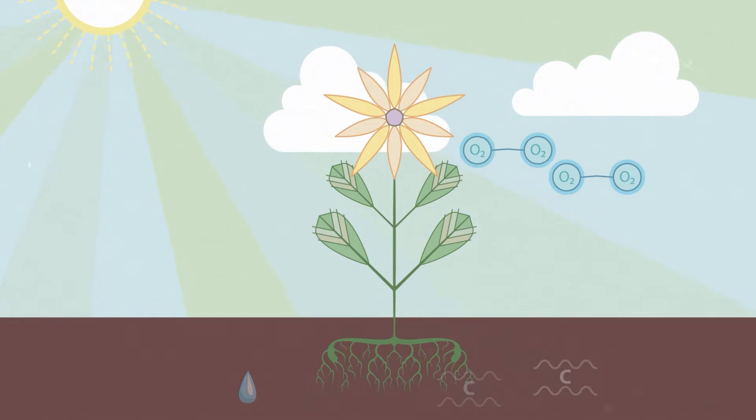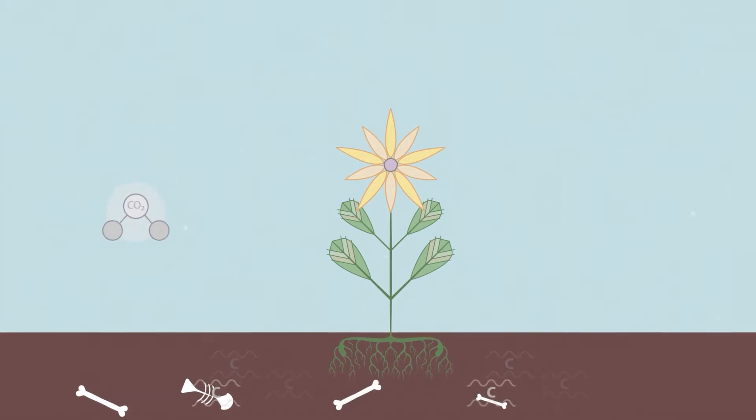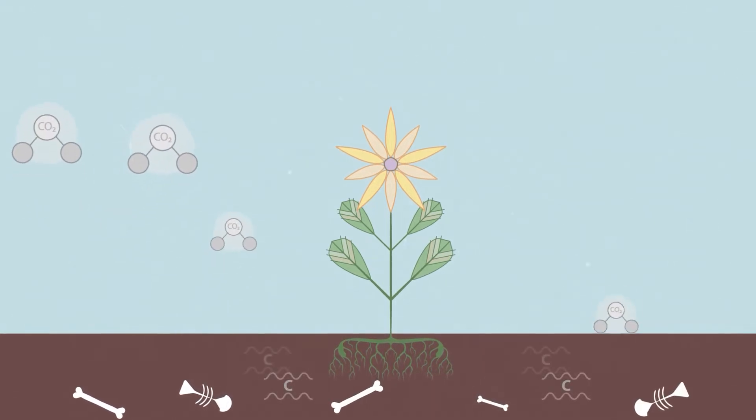The sugars contain carbon and allow the plants to grow. Some of those carbon molecules are transferred into the soil through the plant's roots. When plants and animals die, they release some carbon into the soil and some into the atmosphere.